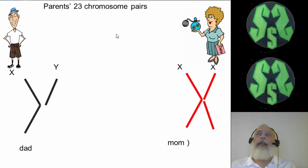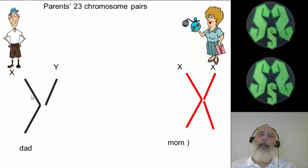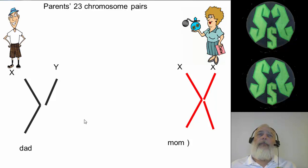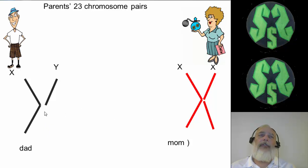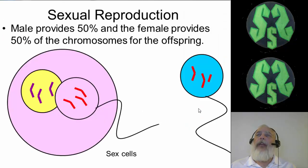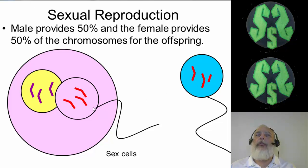The dad in the 23rd chromosome pair is going to have one X chromosome — that's the longer chromosome — and one Y chromosome, the shorter chromosome. The mom is going to have one X chromosome and another X chromosome. The dad is missing part of the chromosome that the mom has, so he doesn't have certain information that the mom carries.